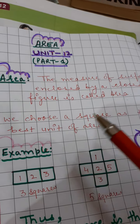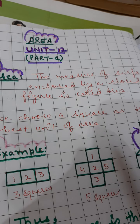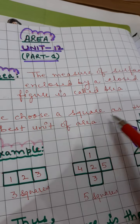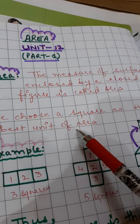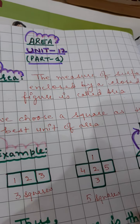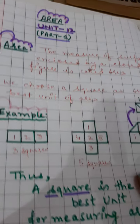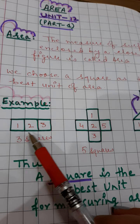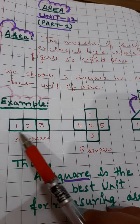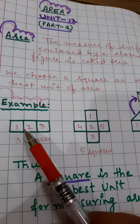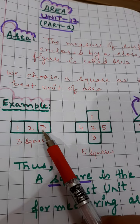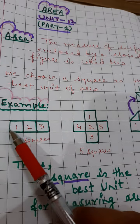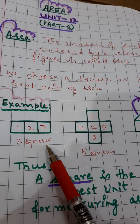So what are the units to measure area? We choose the square as the best unit of area. Why? Let us understand this by taking more examples. Here you can see, in this figure, this is a rectangle. There are 1, 2, and 3 squares. So the area covered by this rectangle is 3 squares.